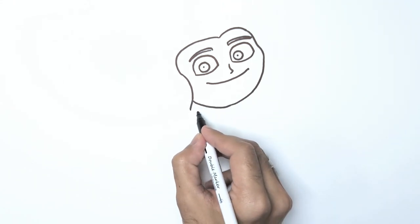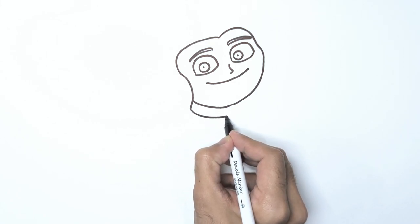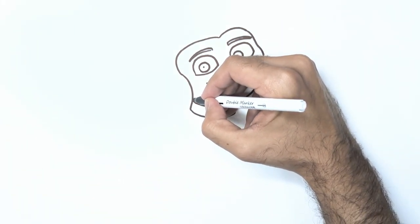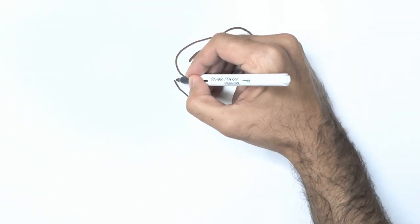Step 4. Time to draw his neck. Add a straight line beneath his face. Step 5. Moving on to his hair. Make wavy lines to show off his unique hairstyle.